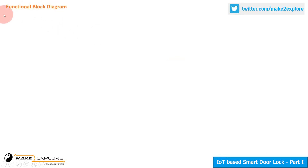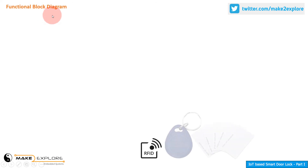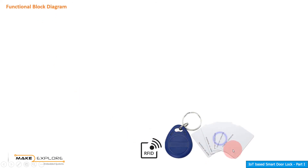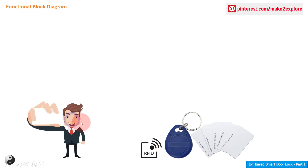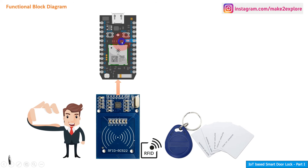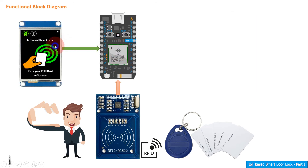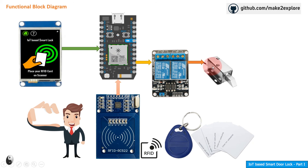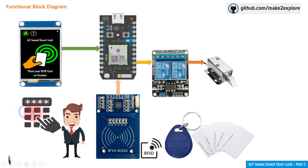Now let's see the functional block diagram of the project and understand how the project will work. There will be RFID cards or tags which we will first register and link to authorized users. This will be done in the initial RFID coding, where we'll connect the RFID reader with the Particle Photon IoT Development Board, NextGen Touchscreen Display, and Solenoid Lock. We'll also assign a unique PIN for each individual user.